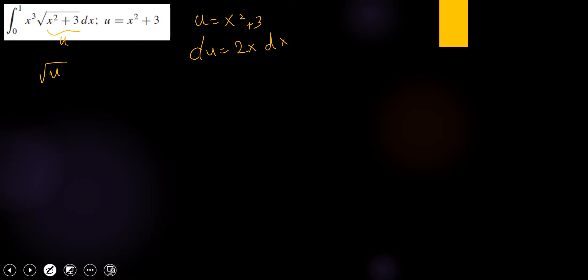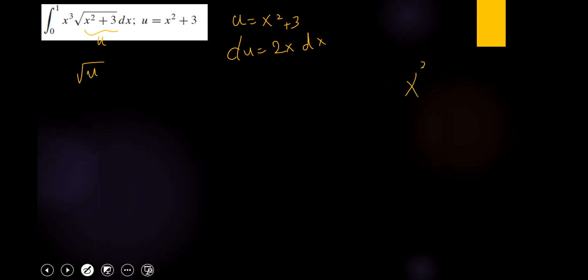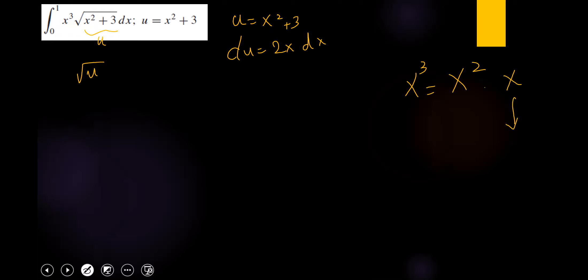We removed the square root using u, but we still have x cubed. We know that x cubed equals x squared times x. So instead of x, we can substitute du over 2, since du over 2 equals x.